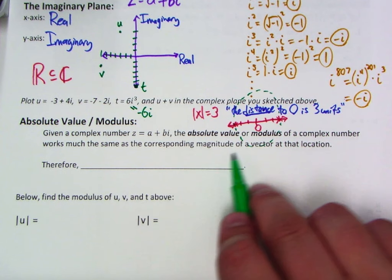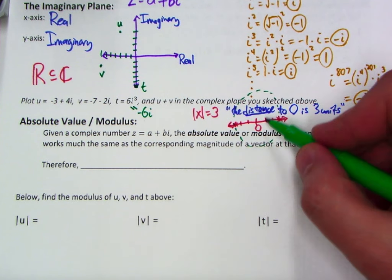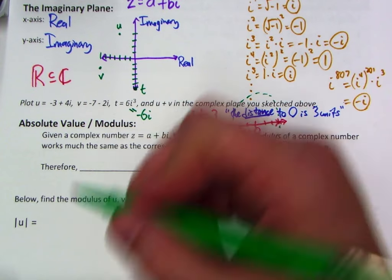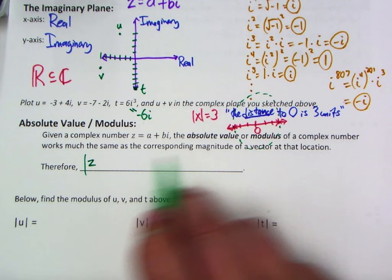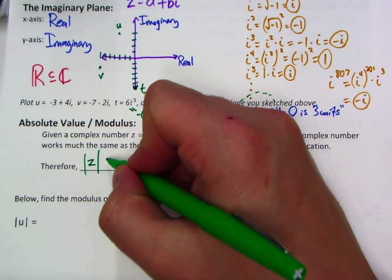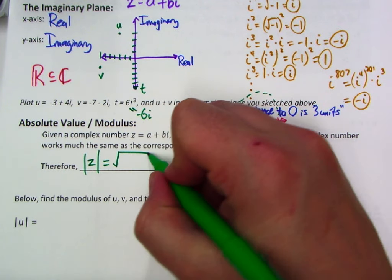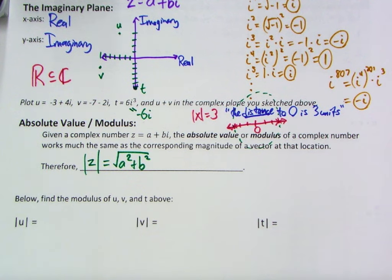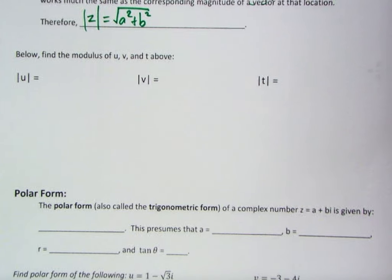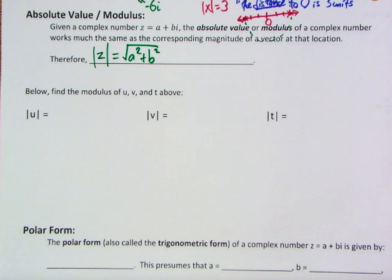This is also called the modulus of a complex number — the same idea of distance that came up with vector magnitudes. The modulus is defined as |z| = √(a² + b²), which behaves exactly like the distance formula. We're just applying it on the imaginary plane now rather than the standard Cartesian plane. Let's try finding the modulus of u, v, and t.